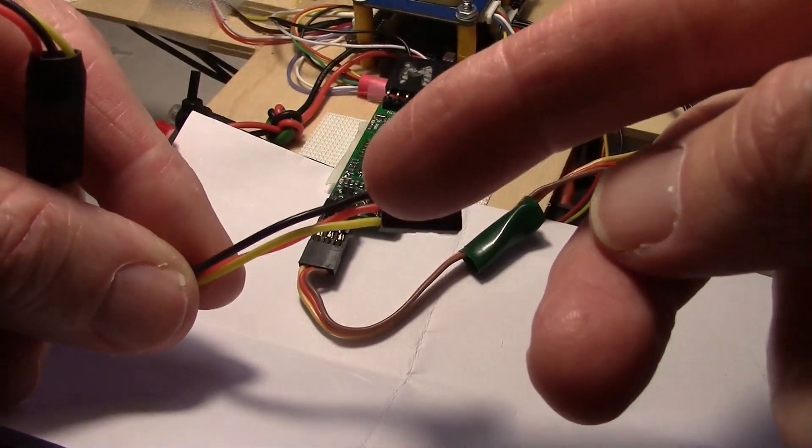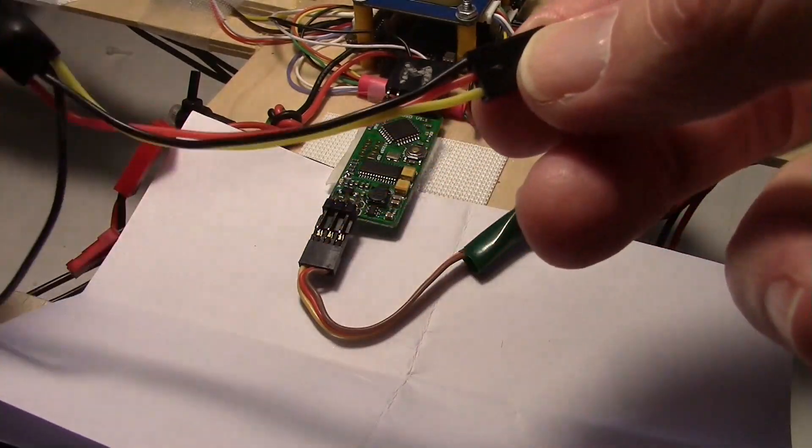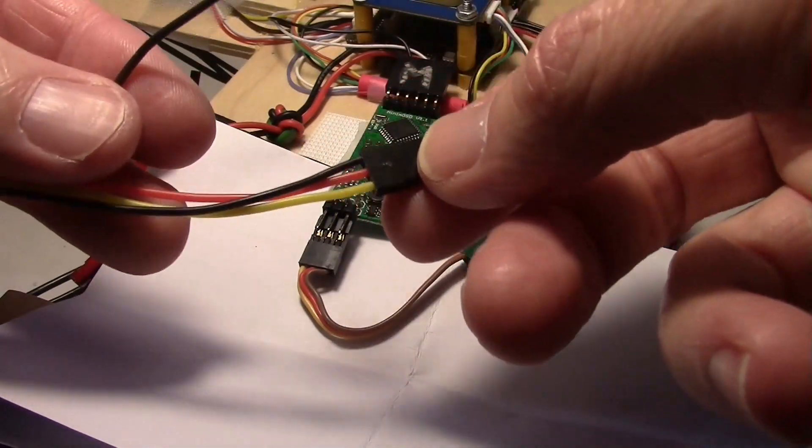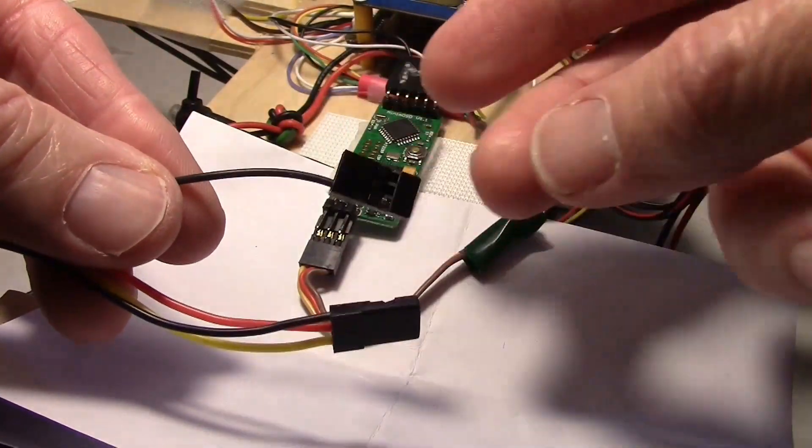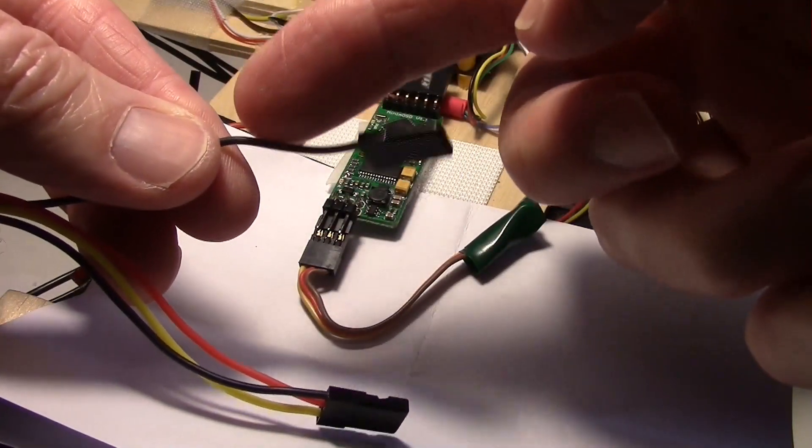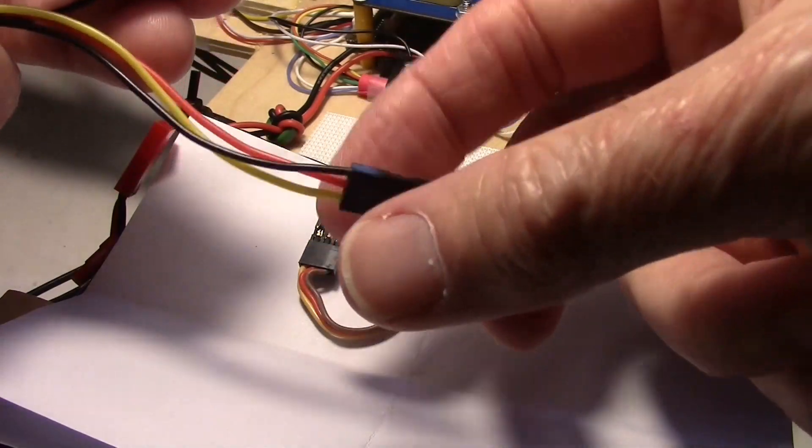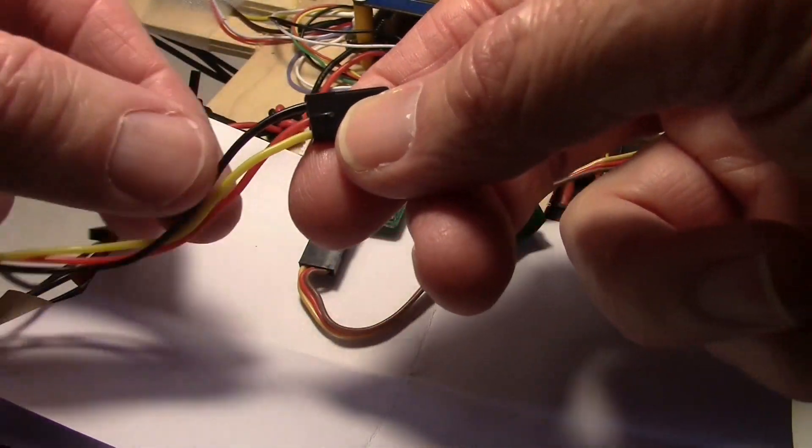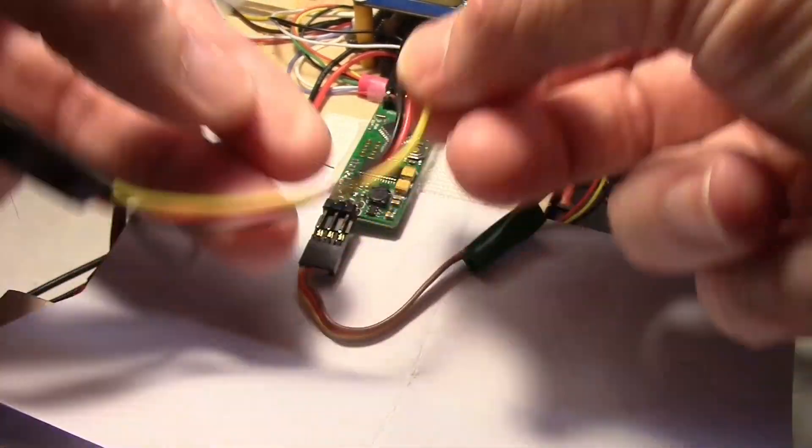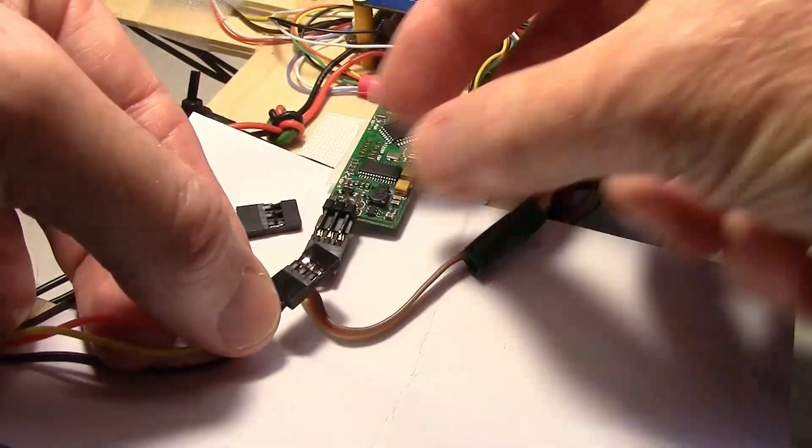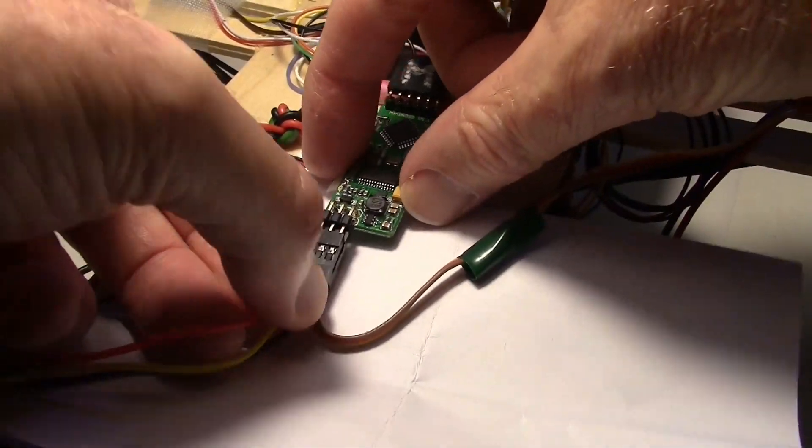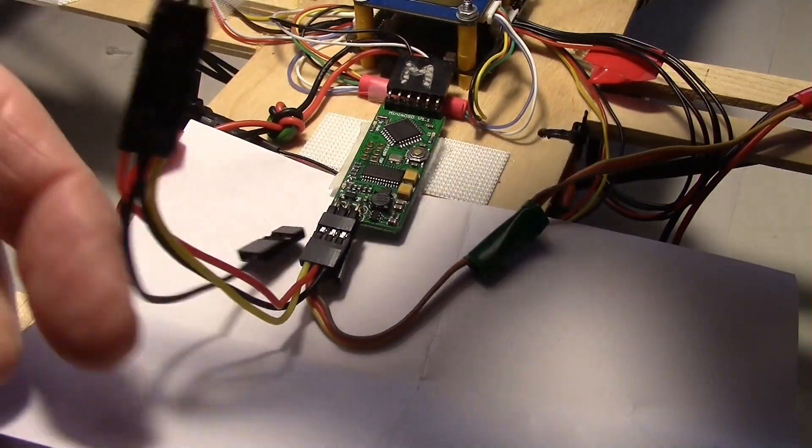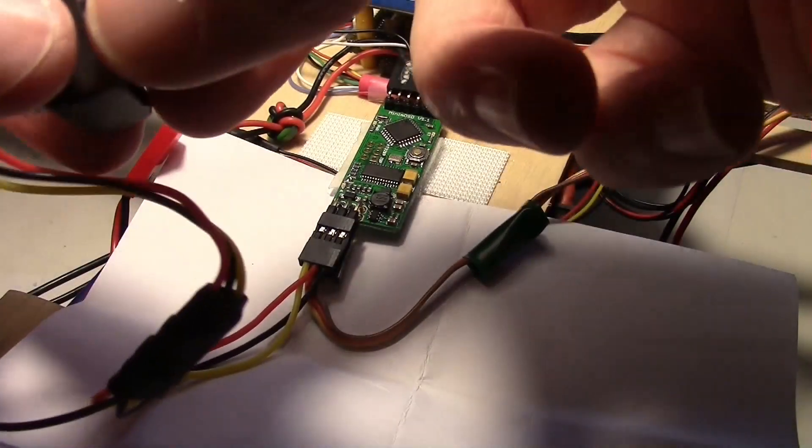Since I've reconfigured the wire to have all three wires on one plug, I can just plug it onto my Minim OSD right here. Keep in mind this other wire is not going to be used, but this black wire is the same ground that's on this one, so I don't need both. I've got a ground, that's all I need. Now I can plug this right onto the Minim OSD. The OWL camera is ready to go.